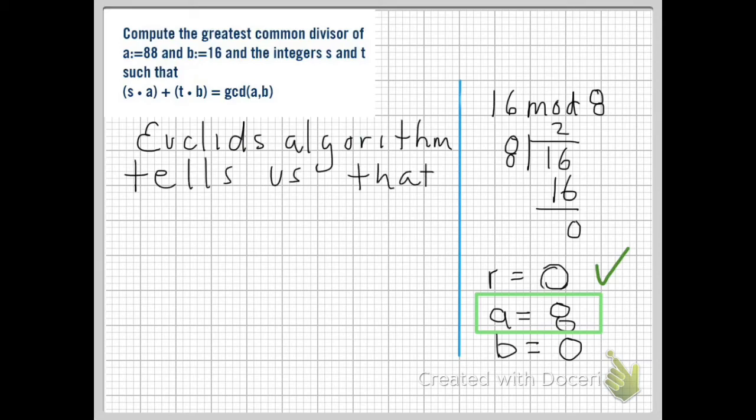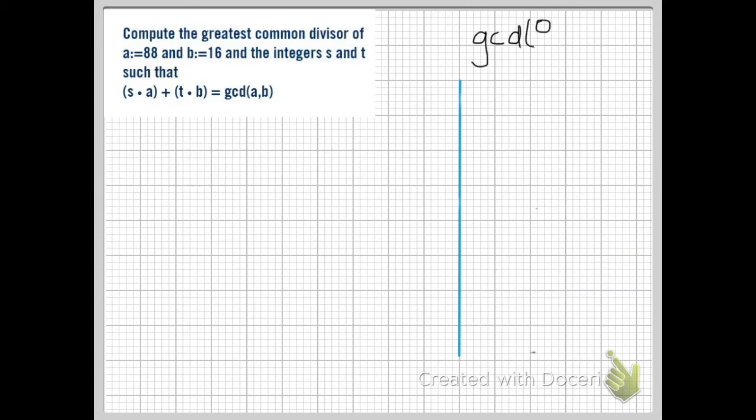So Euclid's algorithm tells us that the GCD of 88 and 16 equals 8. We write that in the corner so that we remember it. And now we want to find s and t.